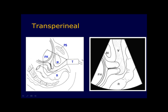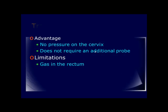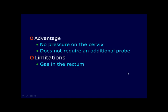In the translabial technique, the same transducer used for transabdominal scanning is covered with a plastic wrap to minimize infection risk. Scanning is performed with an empty bladder. The transducer is placed longitudinally on the anterior perineum between the labia, directed parallel to the vagina so that the vagina appears on top of the monitor. The cervix is adequately visualized in over 90% of patients, especially in the third trimester. The transducer does not enter the vagina, so there is no pressure on the cervix, and no additional probe is required. The main limitation is rectal gas, which can impede visualization.